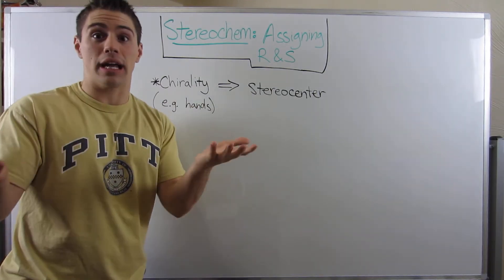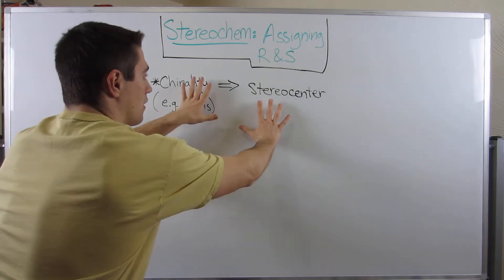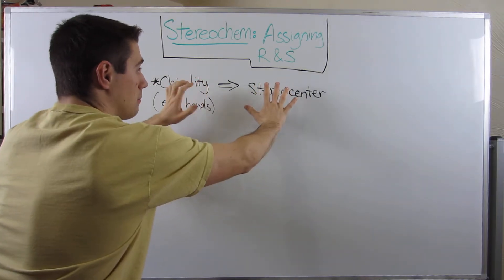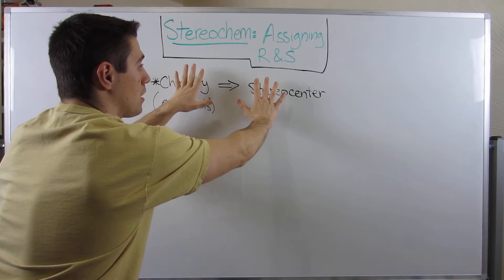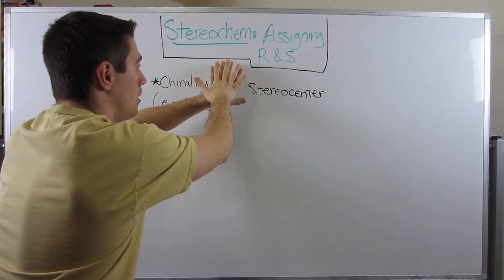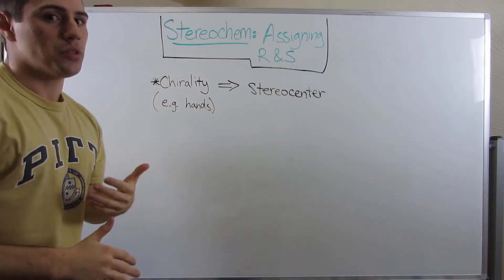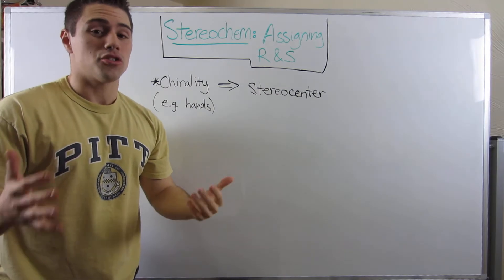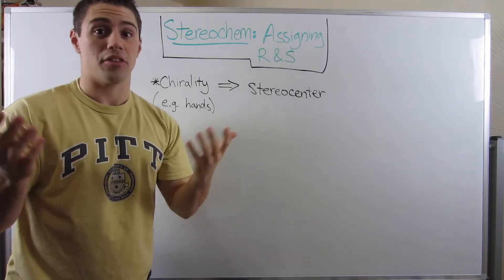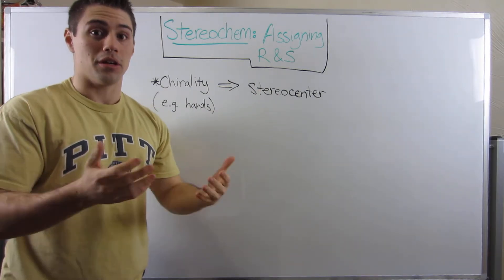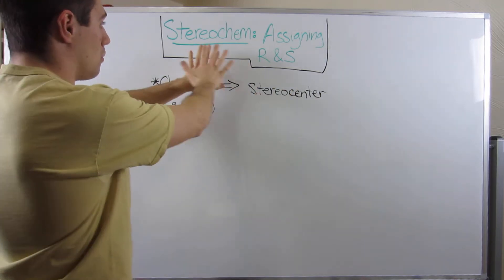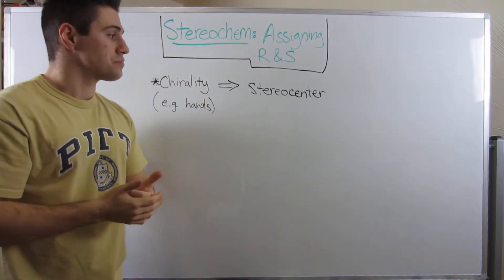So take my hands or your hands for example. If I took my right hand, my left hand would be its mirror image. So if I try and superimpose them and put them on top of each other, you can see that they don't match up. So my right and left hand, they're both chiral. The mirror image does not match up with its opposite.